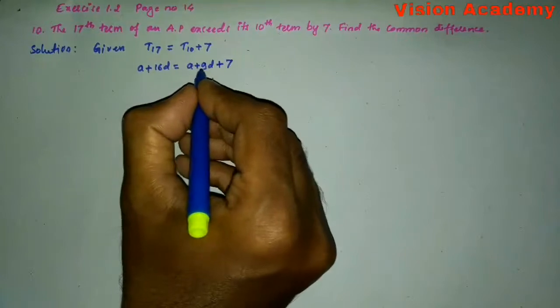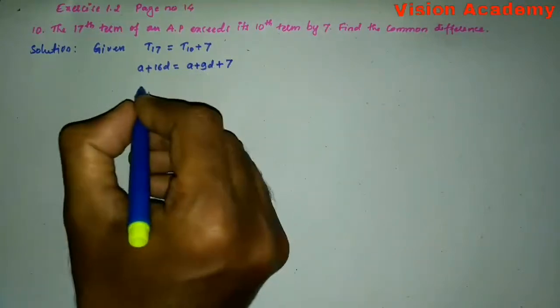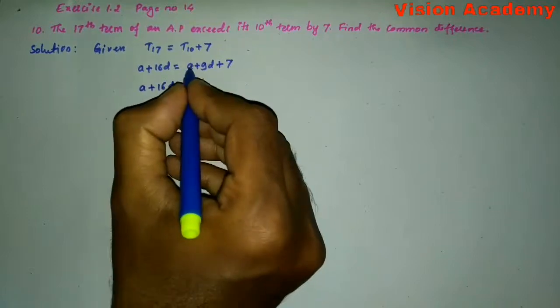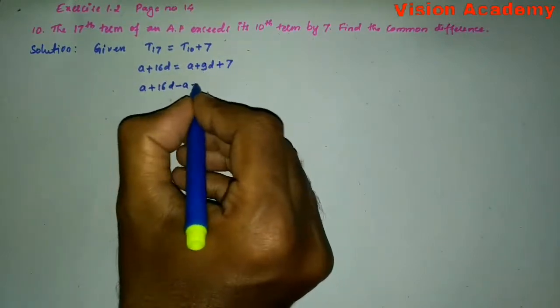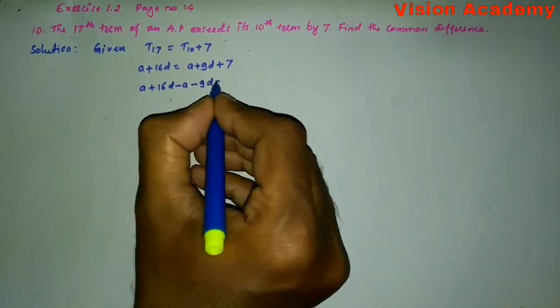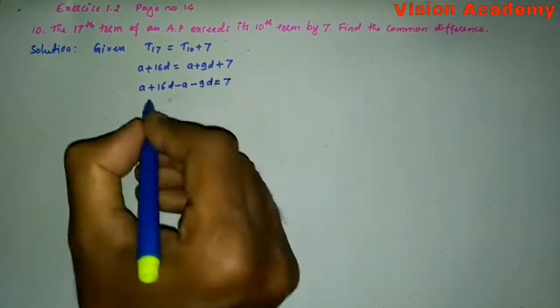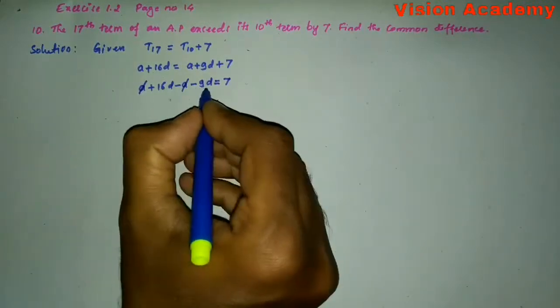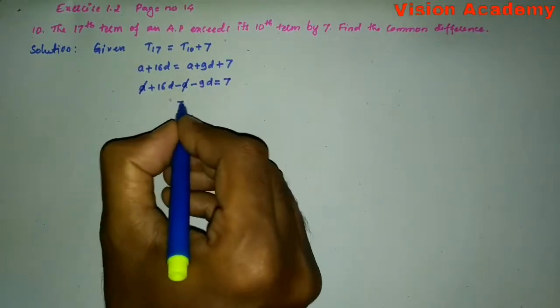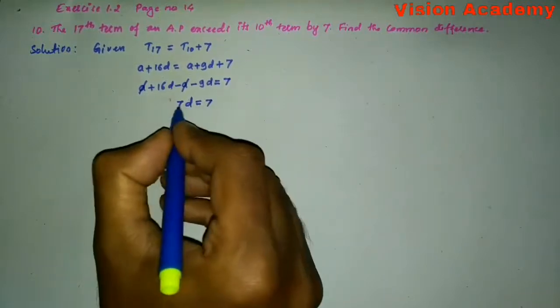Let us transform A plus 9D from RHS to LHS. A plus 16D, this plus A will become minus A, plus 9D will become minus 9D equal to 7. This plus A minus A will get cancelled. 16D minus 9D is 7D equal to 7.